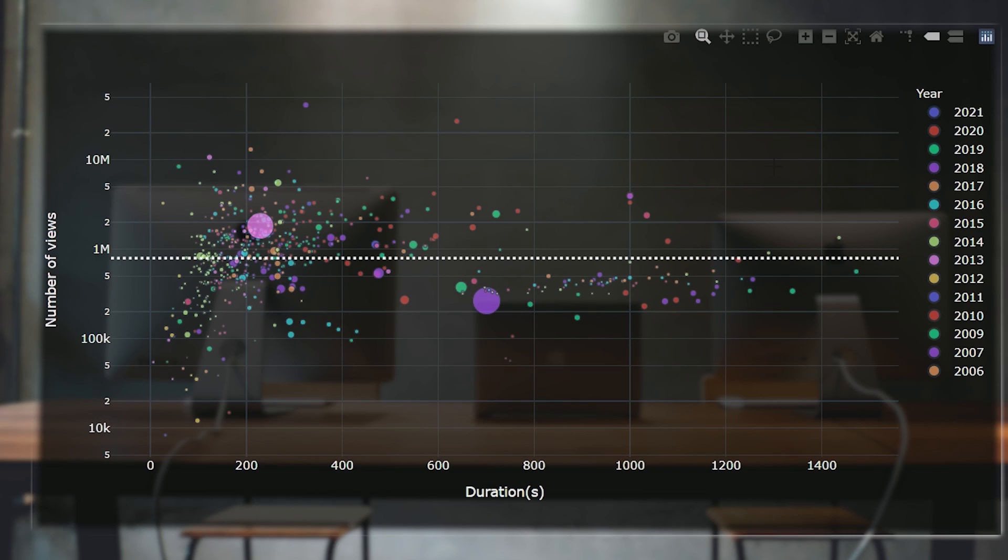What about videos that Tom's viewers dislike? Can we find the most disliked videos on the channel? Well, in this next plot, I've made marker size proportional to the percentage of dislikes, and it's very obvious to see which videos are disliked. Now, it's important to point out that the level of dislikes on Tom's channel are generally very low.